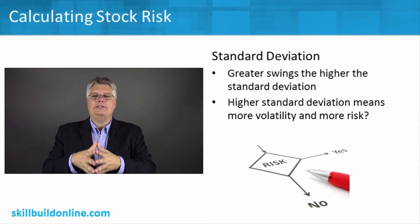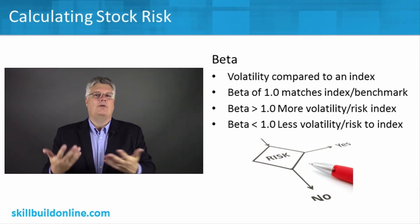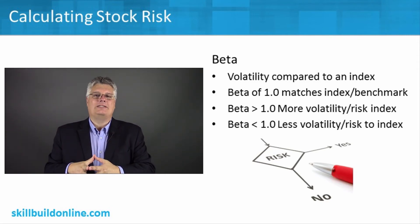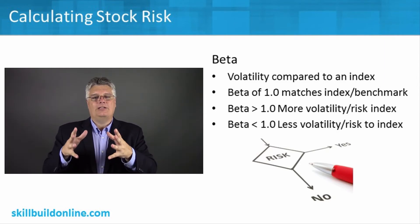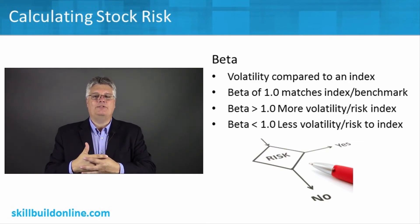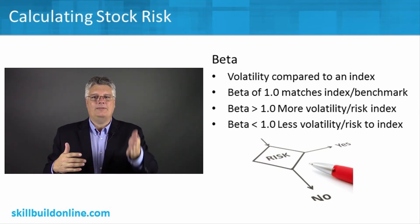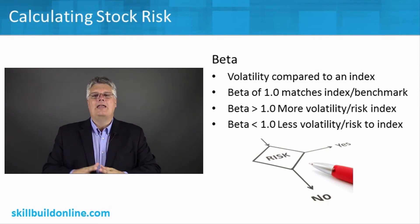Standard deviation compares highs and lows versus an investment's own returns. Another way to look at stock risk is beta, which is really useful for individual stocks. The key difference is that standard deviation looks at the individual investment comparing itself, while beta looks at the overall market and compares that individual investment to the overall market or an index. For example, with an S&P 500 index, you can get a beta measure for a stock like Apple to see its volatility compared to the index.